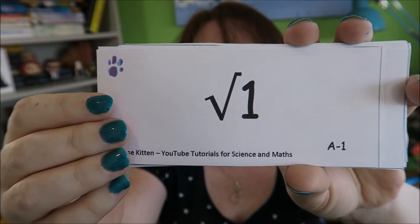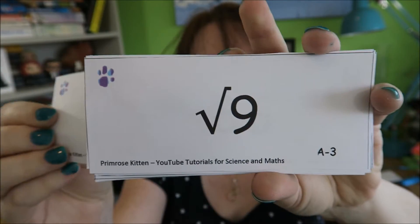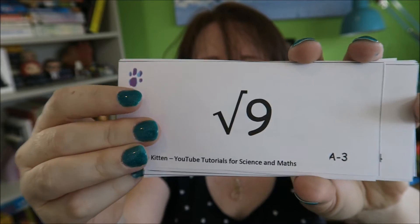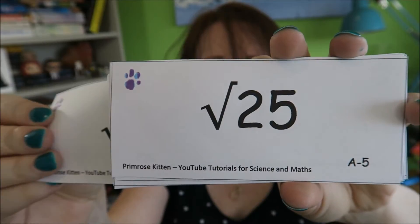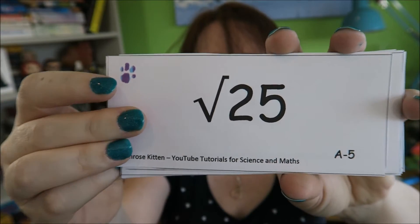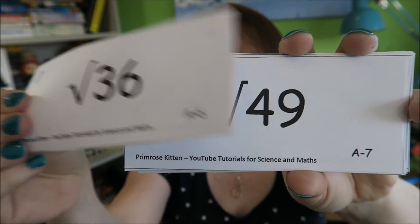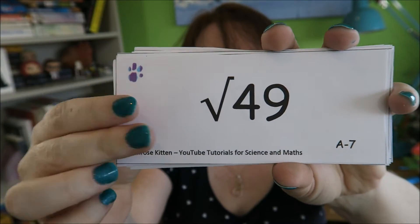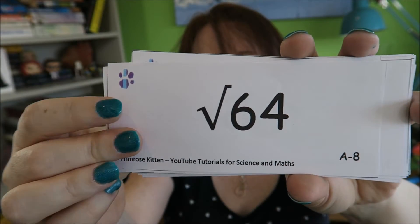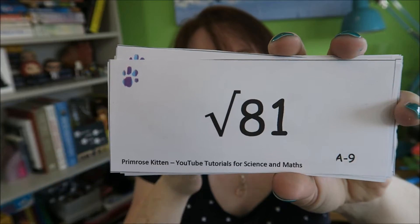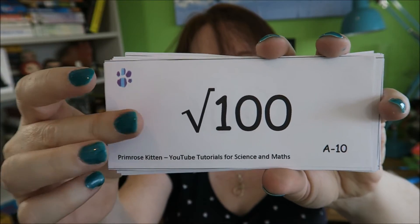Square root of one is one. Square root of four is two. Square root of nine is three. Square root of sixteen is four. Square root of twenty-five is five. Square root of thirty-six is six. Square root of forty-nine is seven. Square root of sixty-four is eight. Square root of eighty-one is nine.